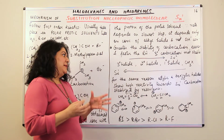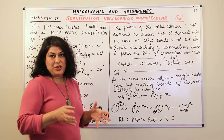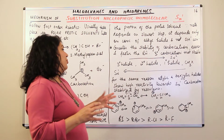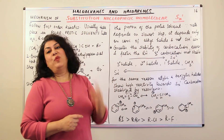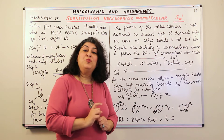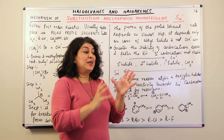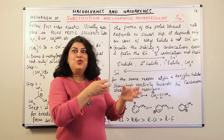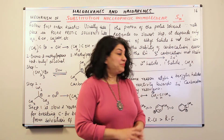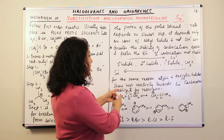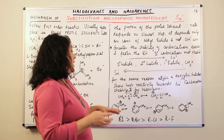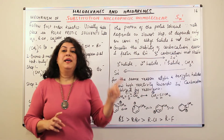For the same reason that tertiary carbocation is more stable, allylic and benzylic halides also show high reactivity towards SN1 mechanism. Why? Because their carbocations are also more stable — the carbocation undergoes resonance. And wherever there is resonance, it imparts stability. Therefore allylic and benzylic halides show high reactivity towards SN1 mechanism because the carbocation is stabilized by resonance.